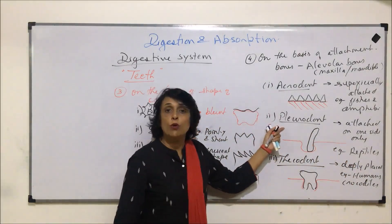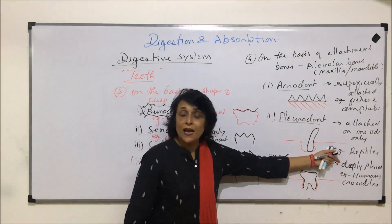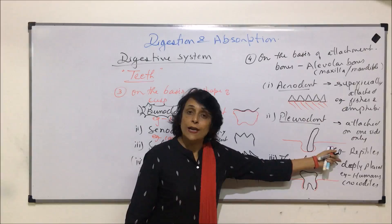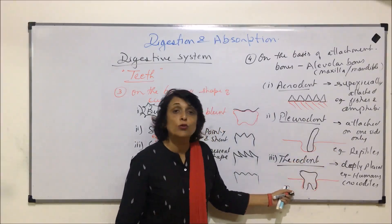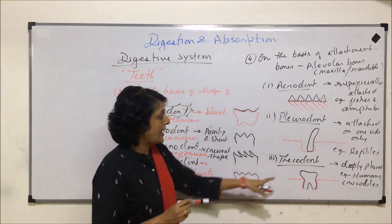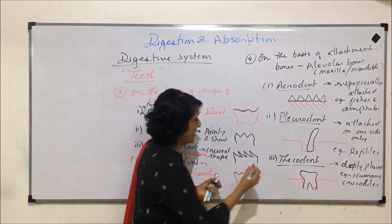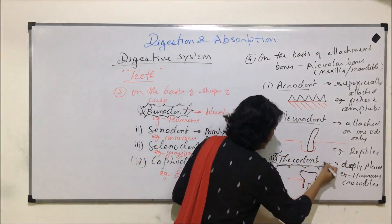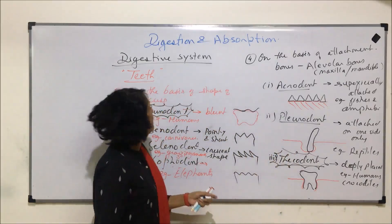And amongst reptiles, this is reported in crocodiles, crocodiles and alligators. So when we write pleurodont, we write reptiles except crocodiles and alligators because they show thicodont dentition. And as we come in this category, so this is one category that we have to remember.